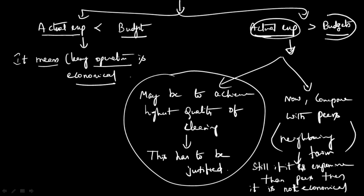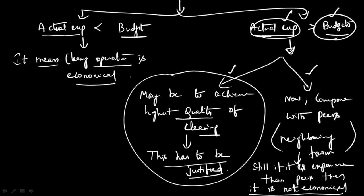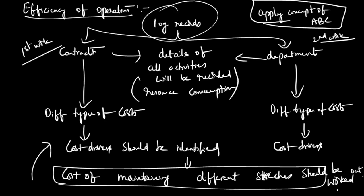If actual expenditure is greater than budget, two conclusions are possible. One: to achieve the highest quality of cleaning, additional expenditure may be justified. The other: you compare with peers — neighboring towns doing the same job. If operations are still more expensive than peers, it means they are not economical, because the neighboring town is doing the same job at a lower price. With this, we are done with economy of operations.